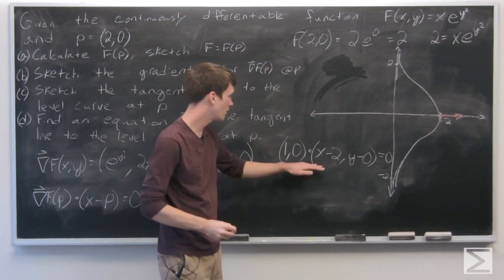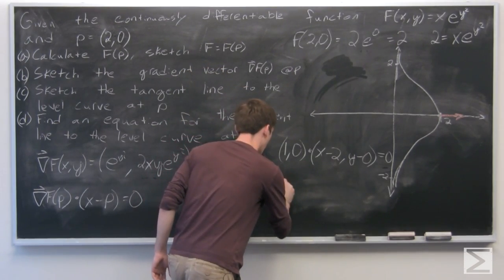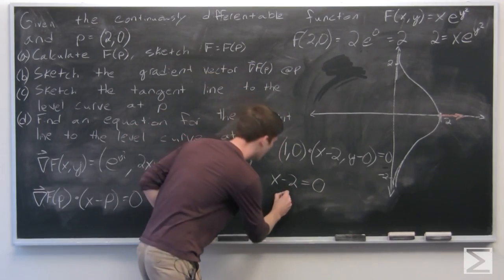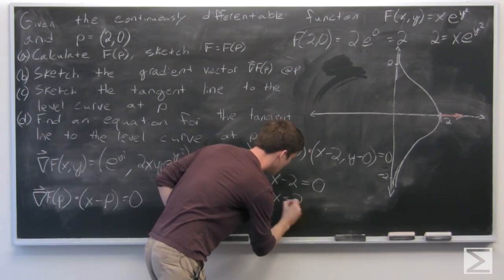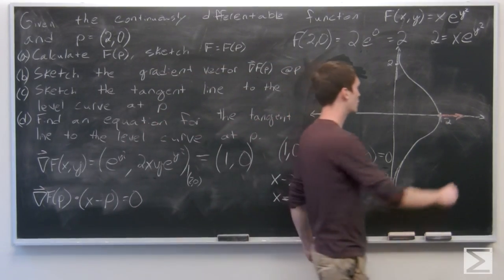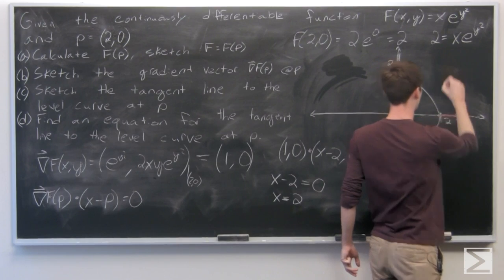So we can evaluate this dot product, and we get x - 2 = 0, or just x = 2. So this is going to be the vertical line at x = 2.